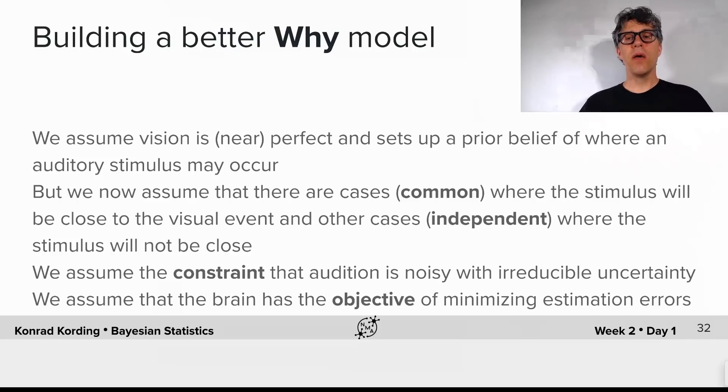And now, we will build a Bayesian model for this case. Now we want a model that also can describe the phenomenon that if we make two things very different from one another, that they break apart, that they're processed independently.